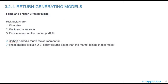The Fama and French model is a three-factor model. The risk factors are: one, firm size; two, book-to-market ratio; and three, excess return on the market portfolio. Carhart added a fourth factor — momentum — and these models explain U.S. equity returns better than the market or single-index model. They're just trying to add factors that help to better explain the returns of individual securities versus the market.